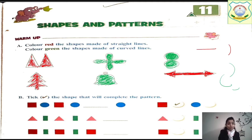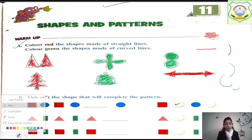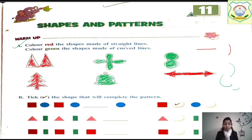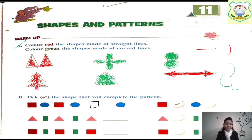After doing question number one, let's come to question number two: Take the shape that will complete the pattern. You have to put a tick mark on the shape that completes the pattern. The first one is already given — see: rectangle, circle, rectangle, circle — so here it will be rectangle. And a tick is marked on rectangle.